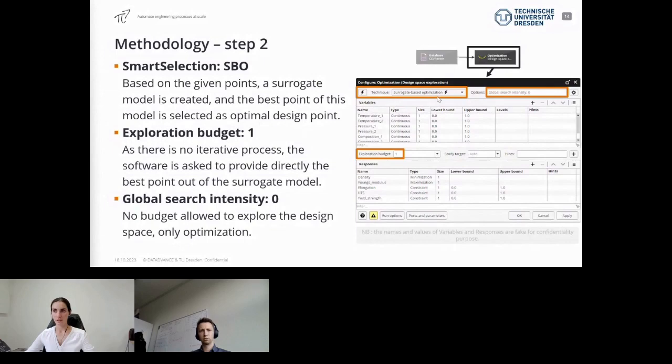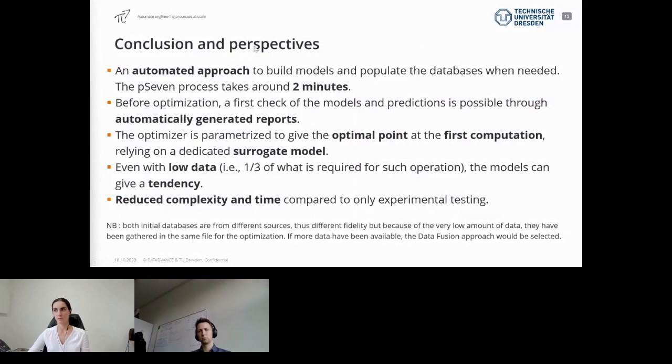As a conclusion, we had those two workflows building an automated approach to first build models and populate database when needed, and then to perform this optimization. The entire process takes around two minutes, which is very fast and brings a lot of knowledge into what can be expected and extracted from the existing databases. It's important that before optimization, a first check of the models and prediction is possible through those reports, so the user has access to some information about the prediction and how accurate they are. The optimizer is also parameterized to give the optimal points as the first computation, relying on the dedicated surrogate model inside the optimizer.